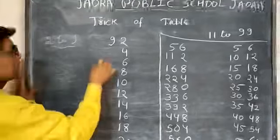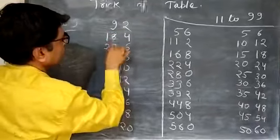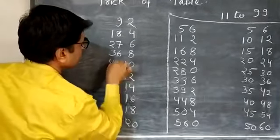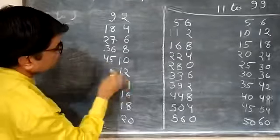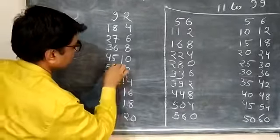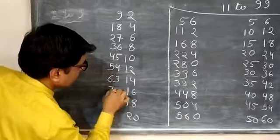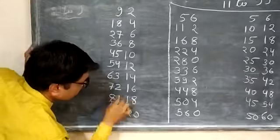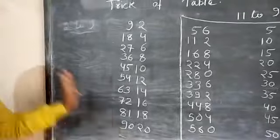Similarly, we'll write the table of 9. We will write the table of 9. Table of 9 also we have written like this.